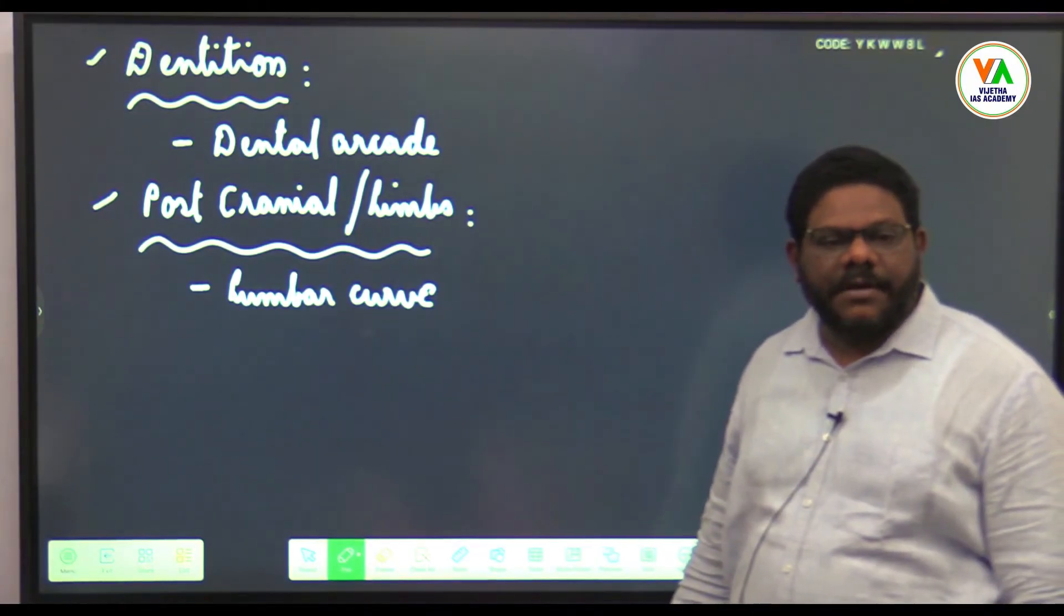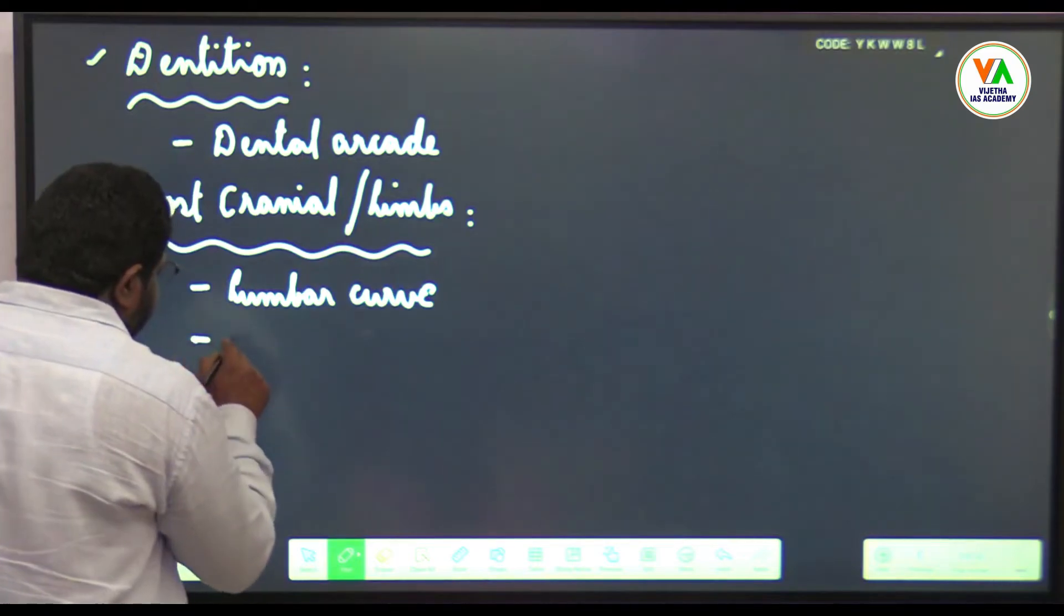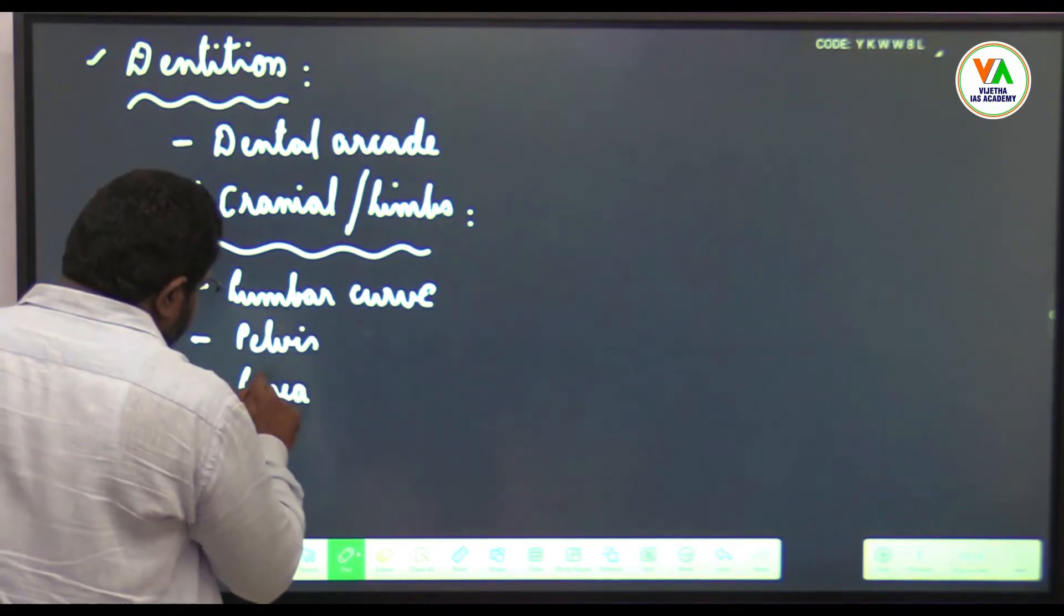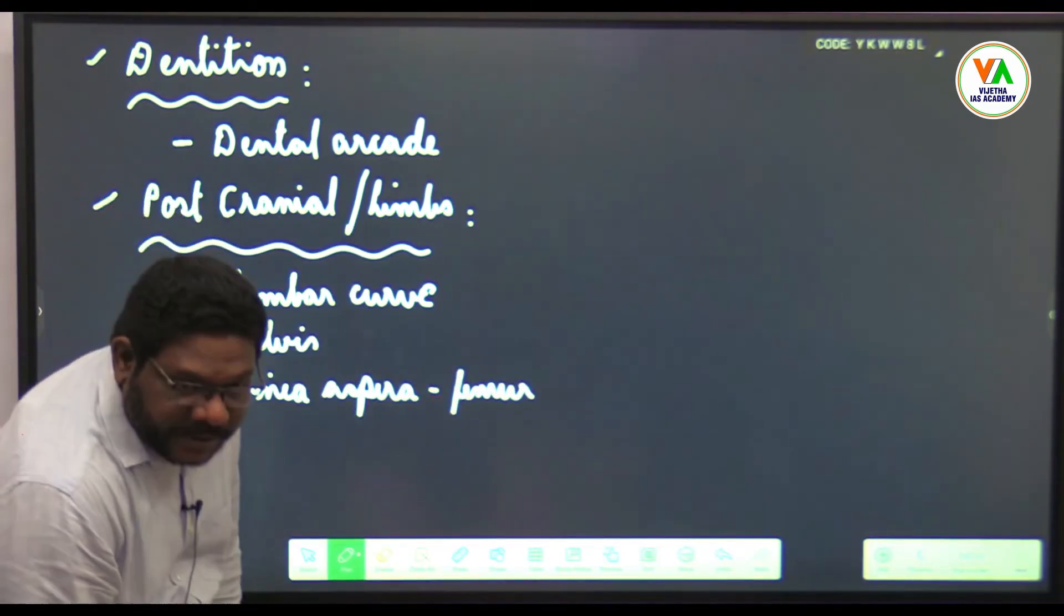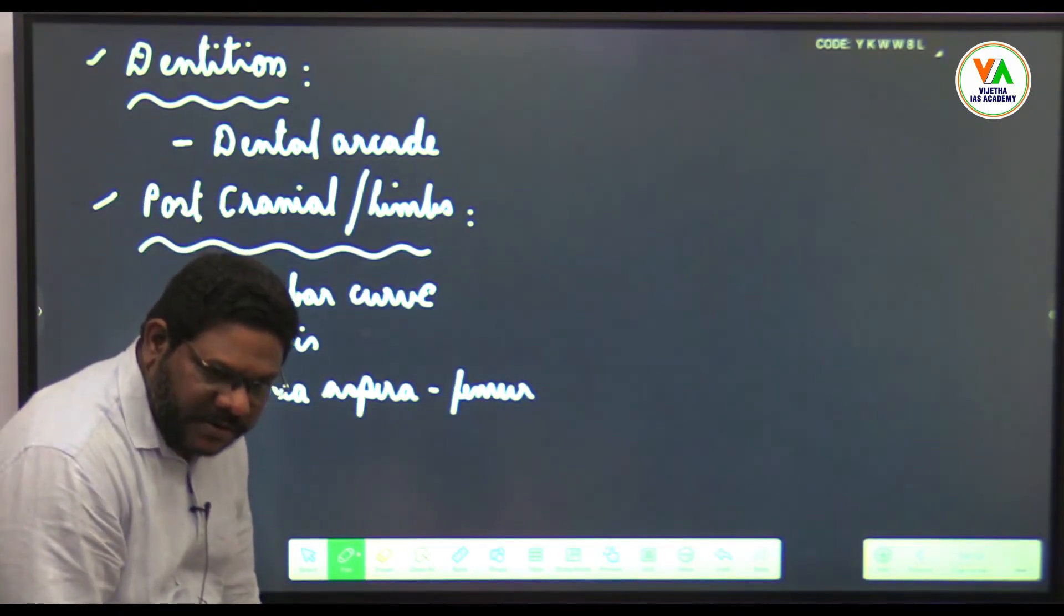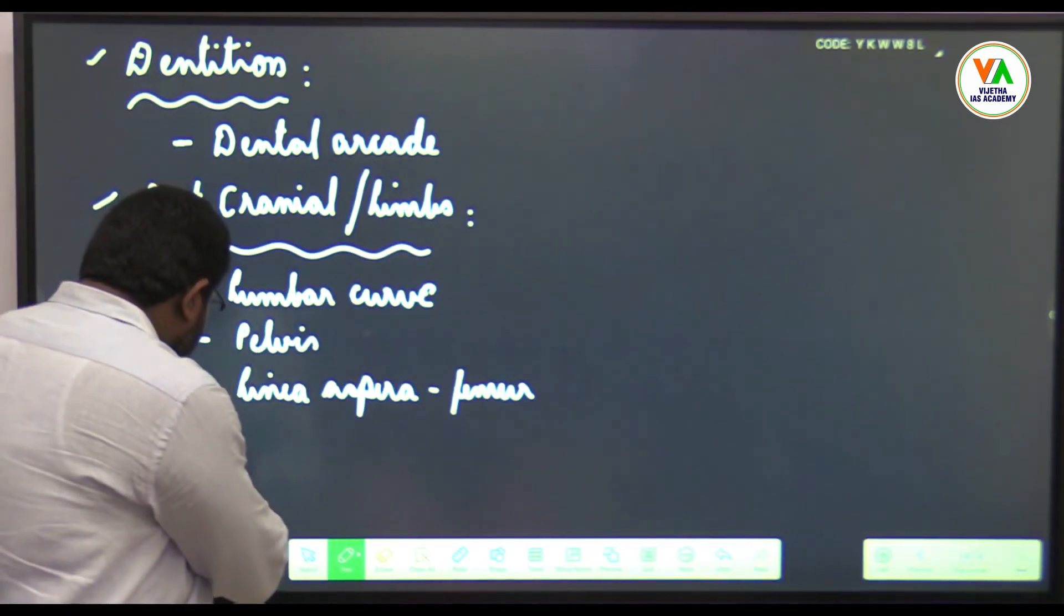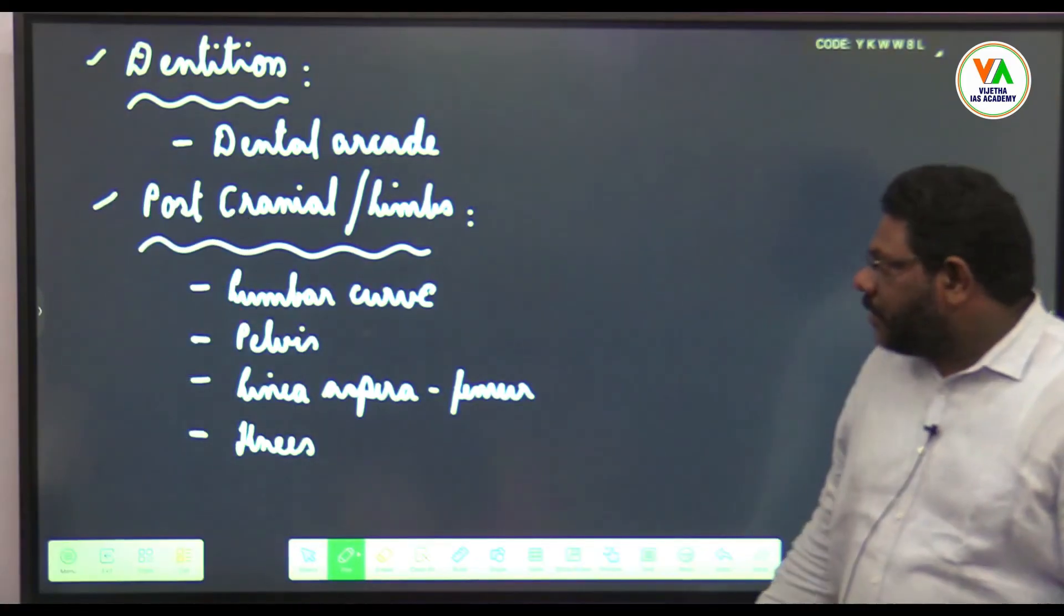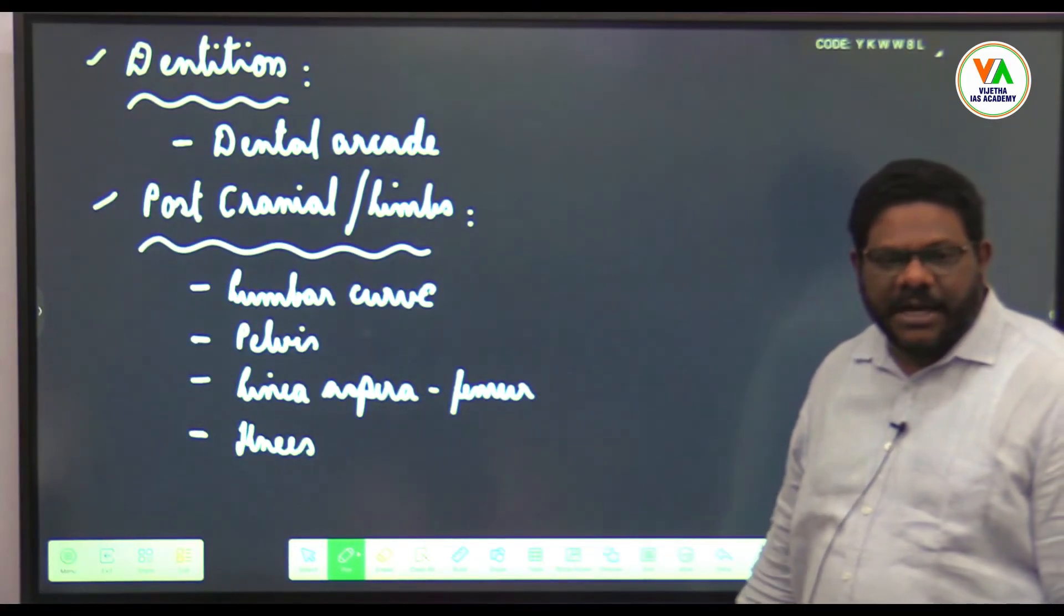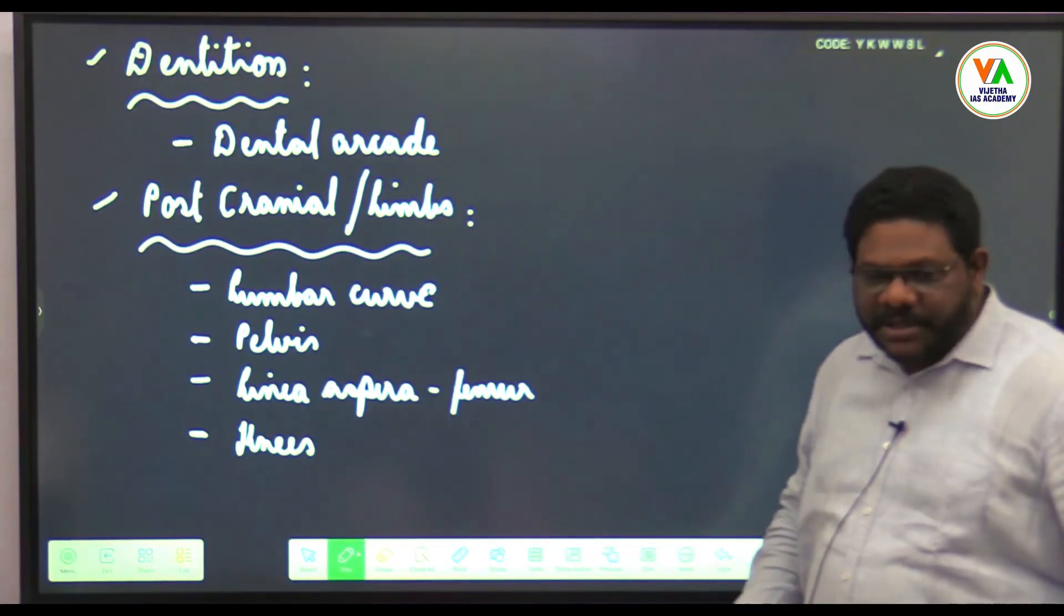Pelvis broad and wide. Femur has linea aspera present. Knees show slight straightening—if earlier it was bent, now slight straightening of knees.